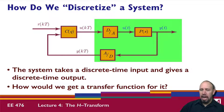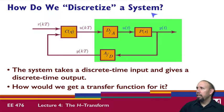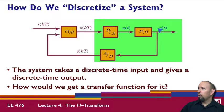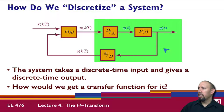The important question we ask and address in this lecture is: how do we discretize a system? We have a digital-to-analog converter going into a continuous-time system, and that goes into an analog-to-digital converter. The input and output are both discrete time. How do we lump all this together and get an equivalent discrete time transfer function? That's the idea of discretizing the system.